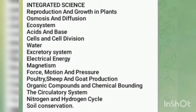Moving on to integrated science: we have production and growth in plants, osmosis and diffusion, ecosystem, acid and base, soil and cell division, water, excretion system, electrical energy, magnetism, flux, motion, pressure, filtration, growth, reduction, and organic compounds.